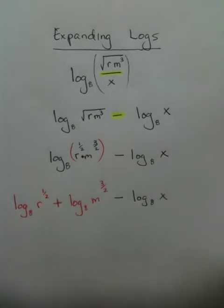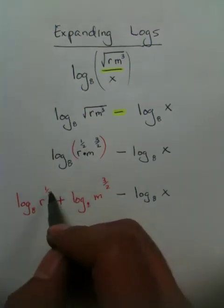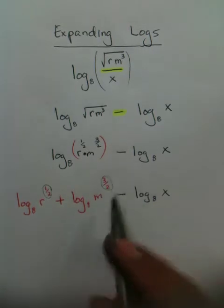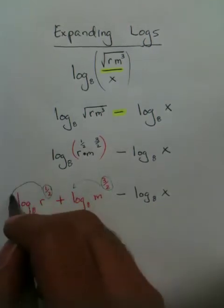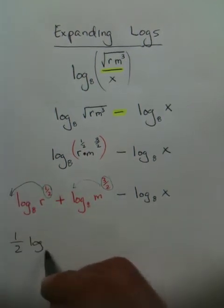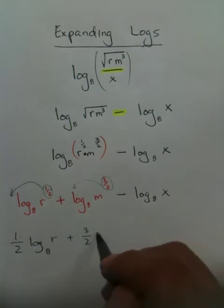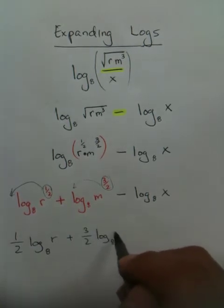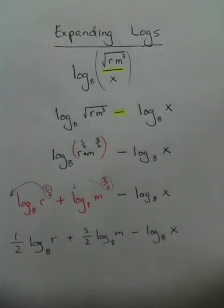So here what I'm doing is just breaking it down into several different pieces. The last step is that you pull this value up here as the exponent in the very front of the log. So you'll get one-half log sub 8 of r plus three-halves log sub 8 of m minus log sub 8 of x.